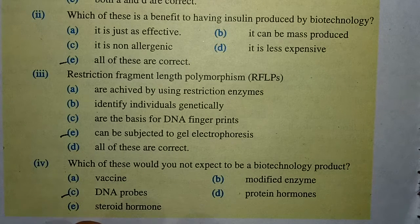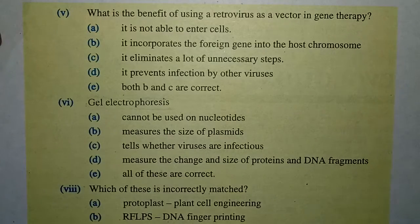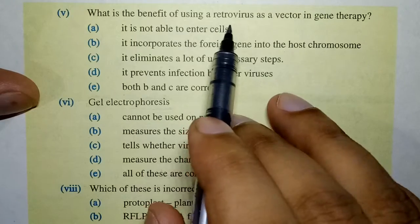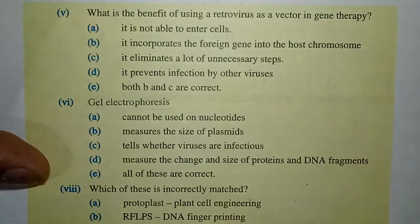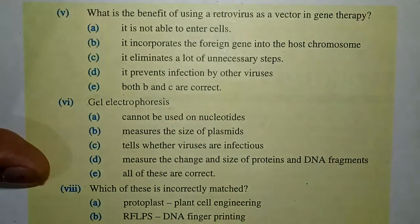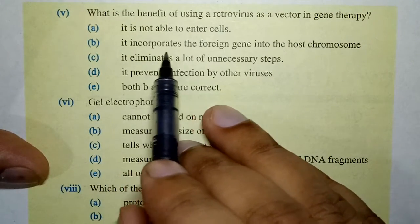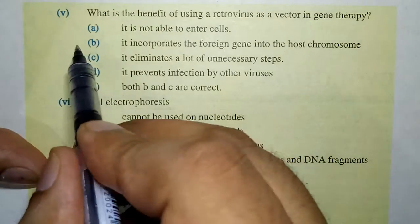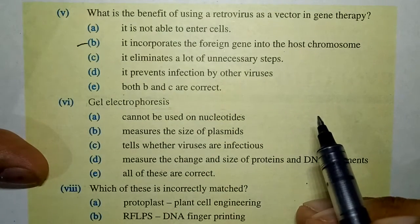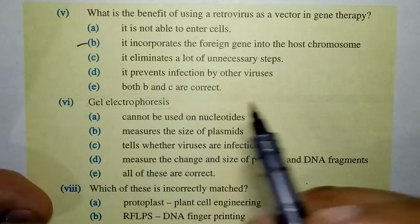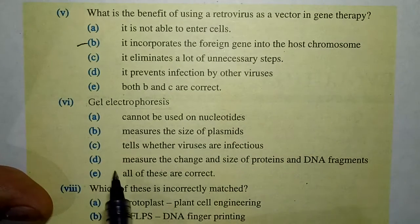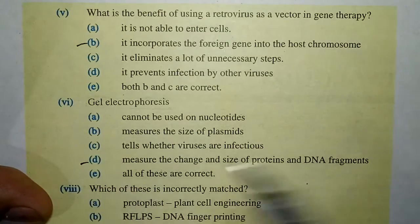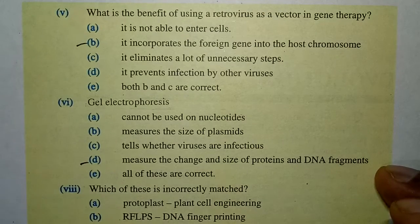The next MCQ: 'What is the benefit of using retroviruses as a vector in gene therapy?' Retroviruses incorporate the foreign gene into the host chromosomes — that is the correct answer. Then, regarding gel electrophoresis, it can separate by the change in size of protein and DNA fragments — that is correct.